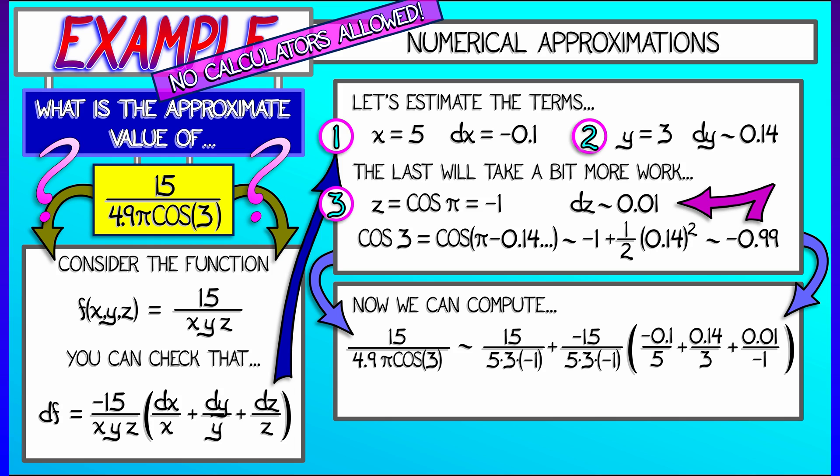Now, even without calculators, we can do all of this stuff by hand. And the 15 divided by 15 times negative 1, that's a negative 1. And then minus 0.1 divided by 5 is minus 0.02. And 0.14 divided by 3, that's roughly 0.047. And then 0.01 divided by negative 1 is minus 0.01. Add those together. Add that negative 1. I get negative 0.983. That's our estimate.